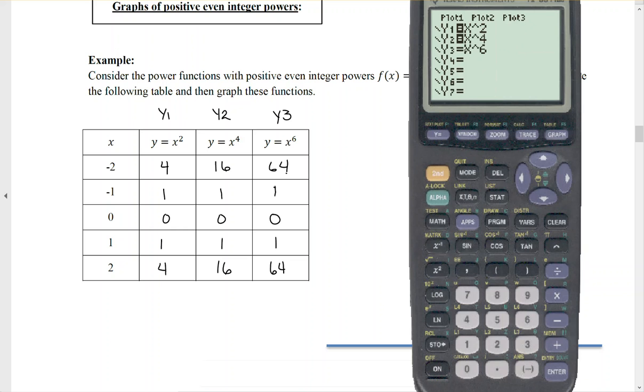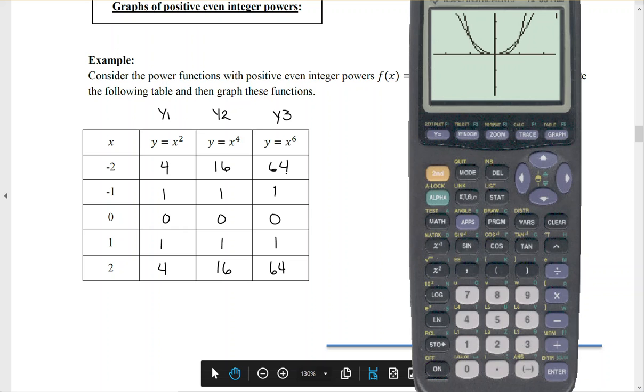So we would expect y equals x to the 6th to be even flatter and go up even quicker. And that's kind of what we see. It goes up quicker and is even flatter.